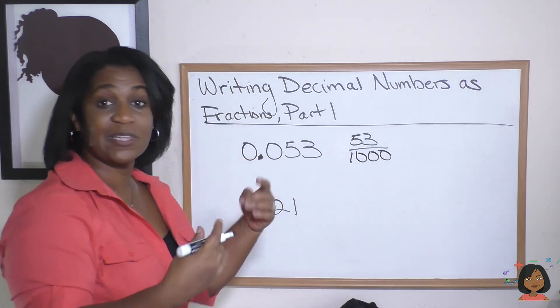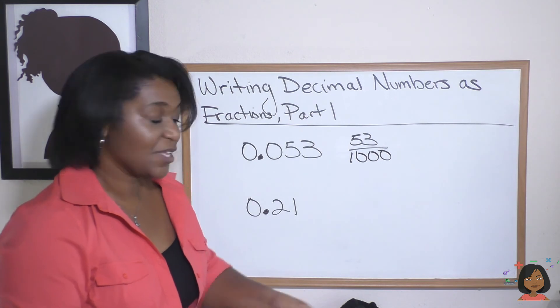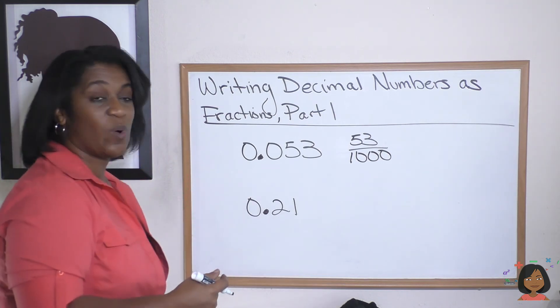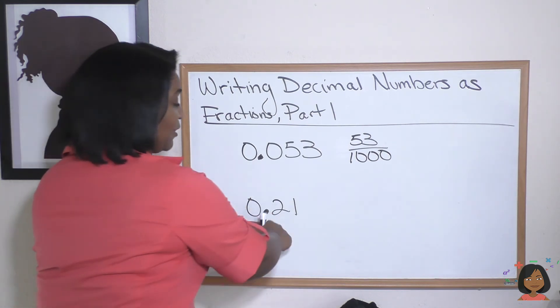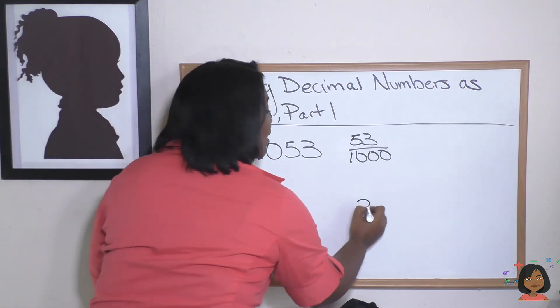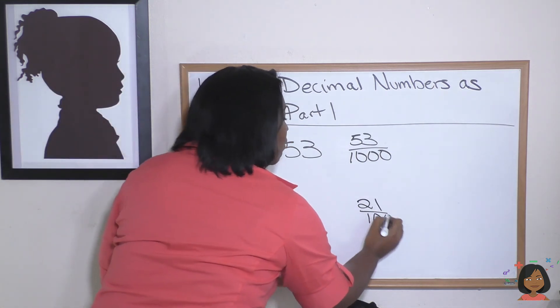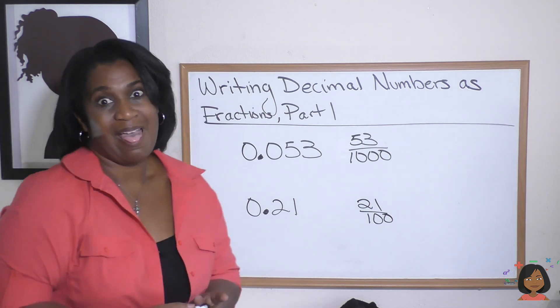Okay, and then we would see if we need to simplify from there. Let's take a look at this one: 21 hundredths. The last place value is the hundredths, so we do our 21 over 100, and that's it.